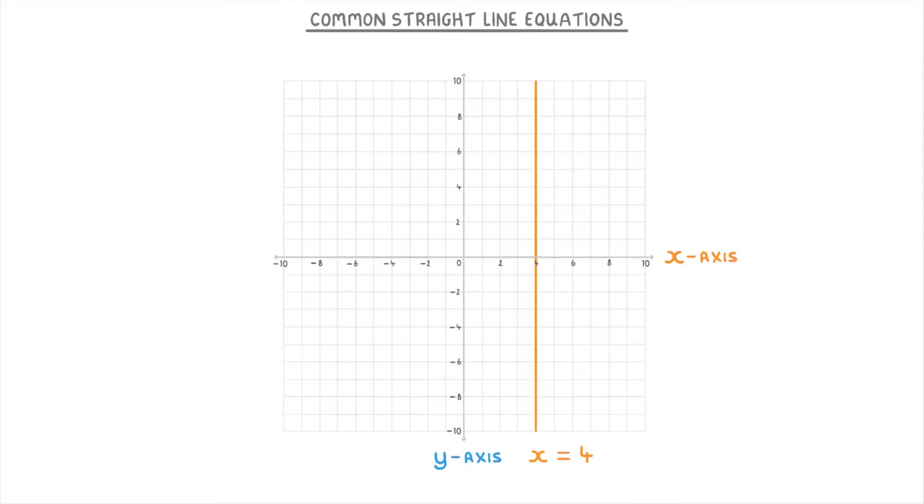We can do the same thing to work out the equations for other vertical lines. So this one is x equals 9, and this over here is x equals negative 2. So basically, whenever you see a vertical line on a graph, its equation is always going to be x equals something.